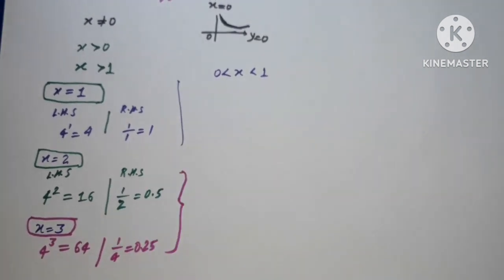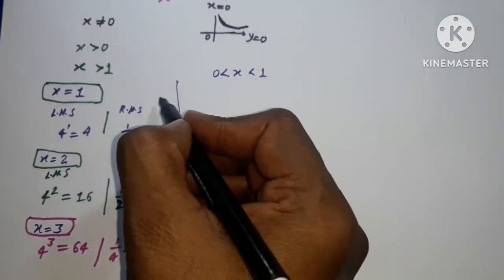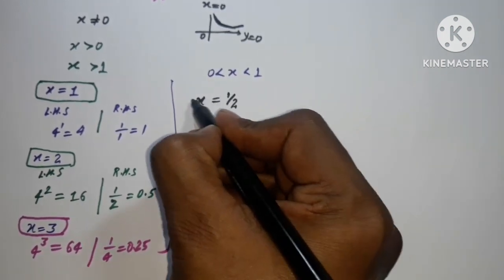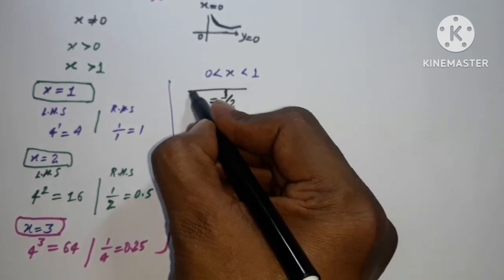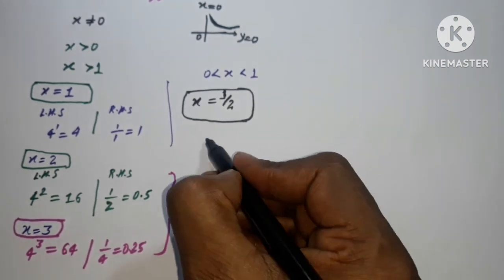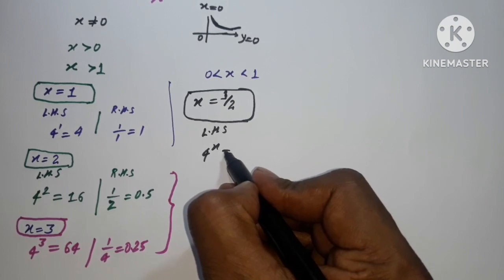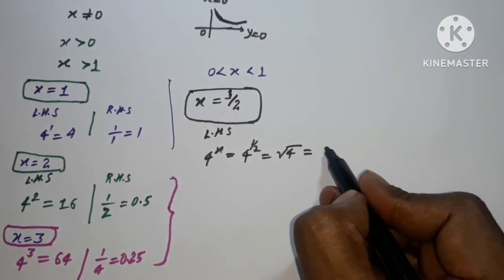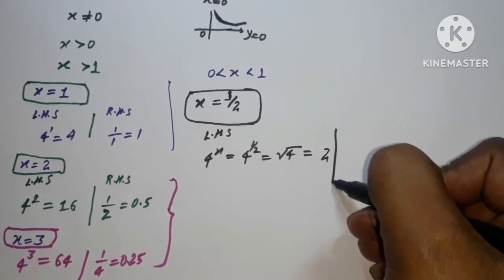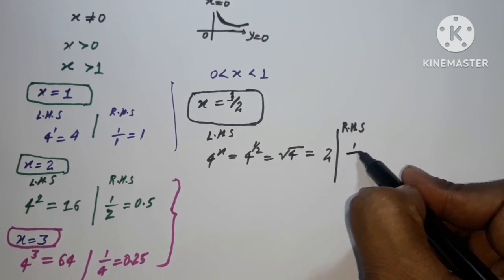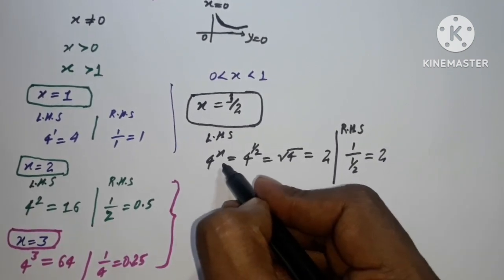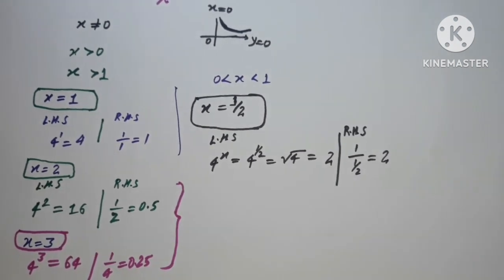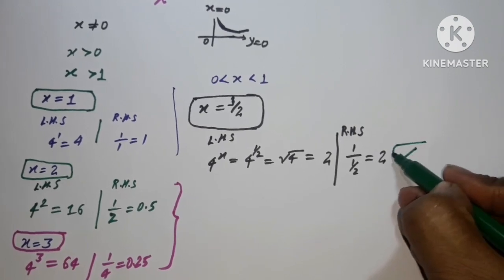Now checking values between 0 and 1. Suppose x equal to 1 upon 2. On the LHS we have 4 to the power 1/2, which is the square root of 4, giving 2. On the RHS, 1 upon x is 1 upon 1/2, which also gives 2. So LHS equals RHS — x equal to 1/2 satisfies the equation.